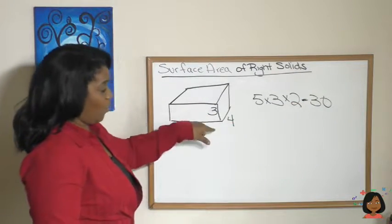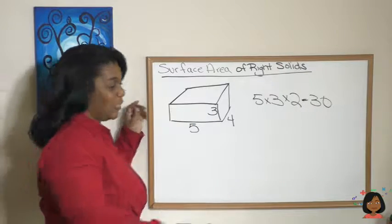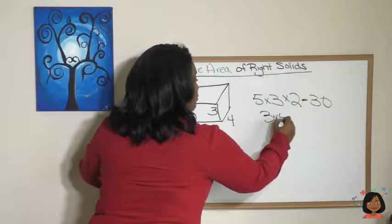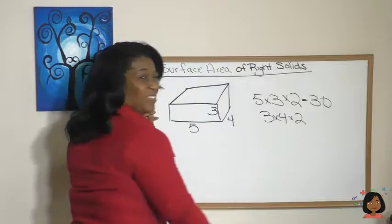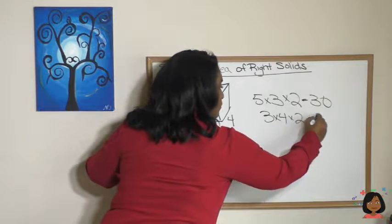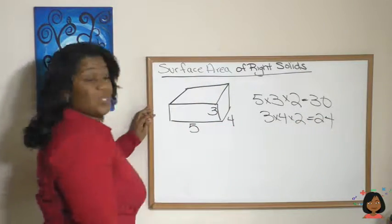All right, let's do the sides. We've got three times four. We're gonna multiply it by two to get the other side. Three times four is 12 times two is 24.